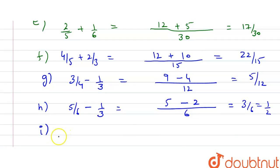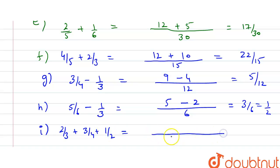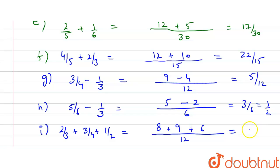Part (i) is 2/3 + 3/4 + 1/2. The LCM of 3, 4, and 2 is 12. So 4 × 2 = 8, 3 × 3 = 9, and 6 × 1 = 6. Adding: 8 + 6 = 14, and 14 + 9 = 23, giving 23/12.